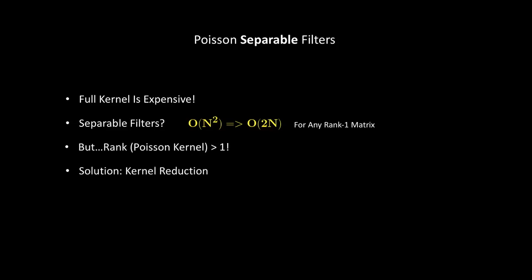What we can do instead is to replace it with separable filters. This turns the O(n²) complexity into a linear complexity for any rank one matrix, but we can easily see our Poisson kernel is not rank one. This makes us think of a kernel reduction to reduce it to rank one.